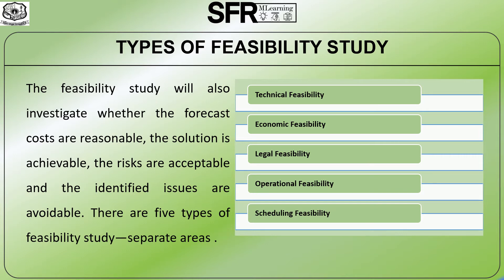To understand all those things, we have five different types of feasibility study, namely: Technical feasibility, Economic feasibility, Legal feasibility, Operational feasibility, and Scheduling feasibility.